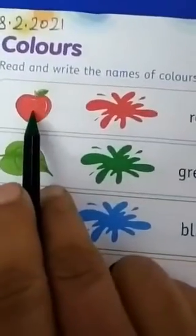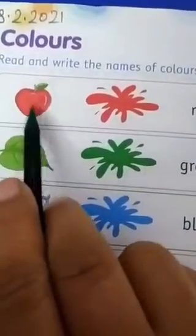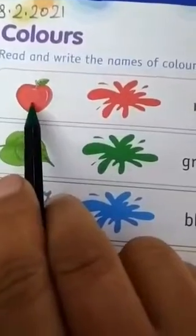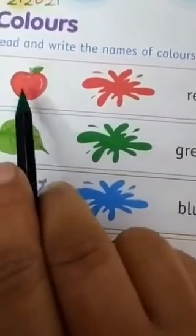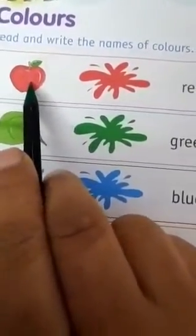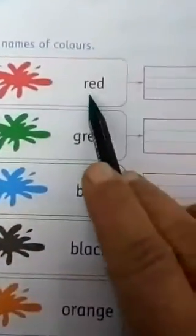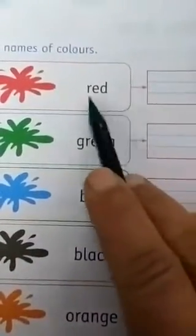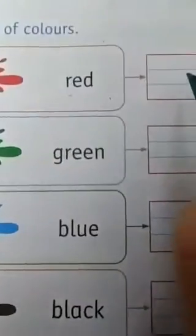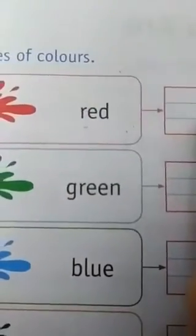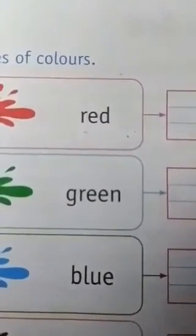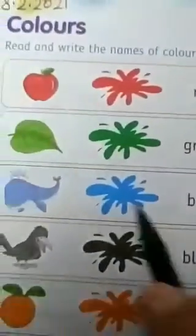What is this? Apple. And apple is in red color. What is the color of the apple? It is red. R-E-D. Red. Now we will write here. R-E-D. Red.